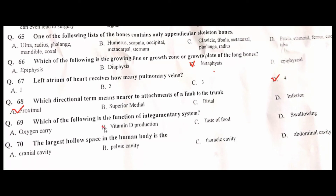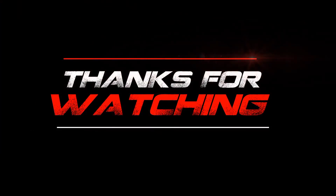The function of the integumentary system includes vitamin D production — B is the correct option. The largest hollow space in the human body is the abdominal cavity — that is the correct answer.